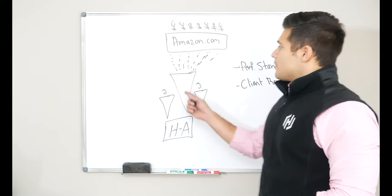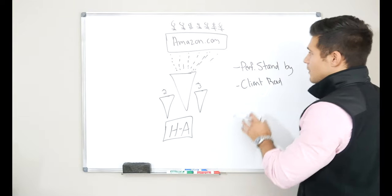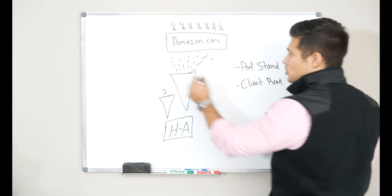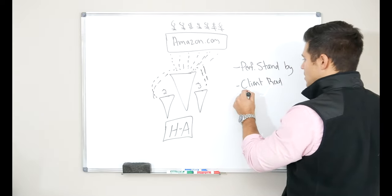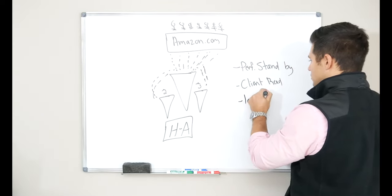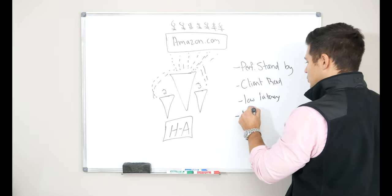Now, the Vault primary node can only take so much traffic. So if we leverage performance standbys, we can use these other two nodes here to get client reads so that you have a low latency model for something like a high throughput situation.